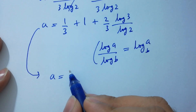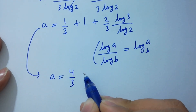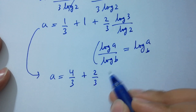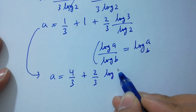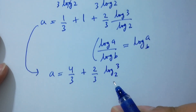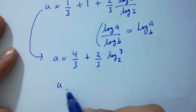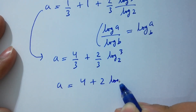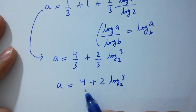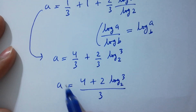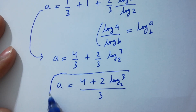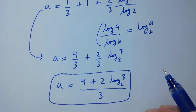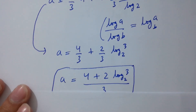Therefore a equals 4 over 3 plus 2 over 3 log 3 to the base 2, which simplifies to a equals 4 plus 2 log 3 to the base 2, all over 3. This is the value of A.